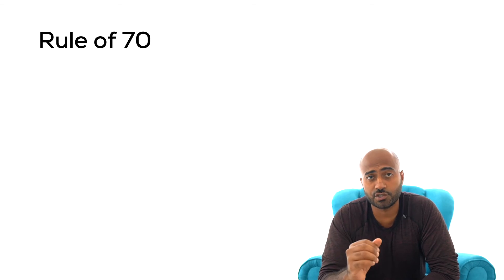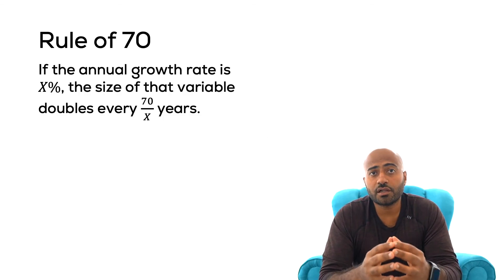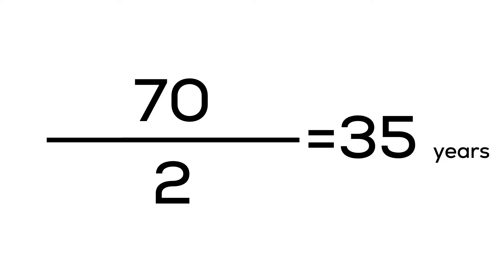The rule of 70 approximates the amount of time it will take your money to double for a given interest rate. For instance, if you have a hundred dollars saved in an account earning two percent interest per year, your money will double — or grow to 200 dollars — in 70 divided by 2, or 35 years.